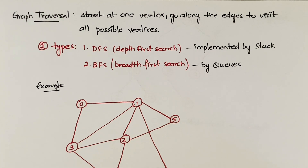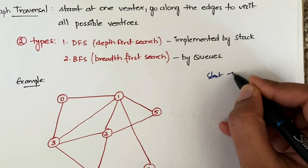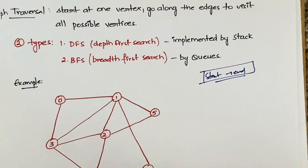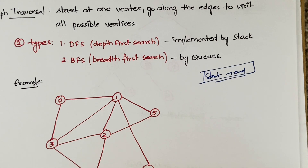In the previous video on tree traversal techniques, I told you that non-linear data structures can be traversed in multiple ways, whereas in linear data structures you have only one way — you start at the starting point and end at the ending point. But what do you mean by traversal? It means visiting each and every node, every element in that data structure — whether it's an array, linked list, tree, or graph.